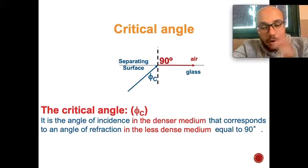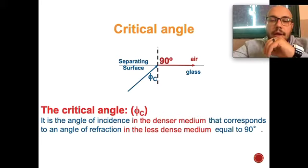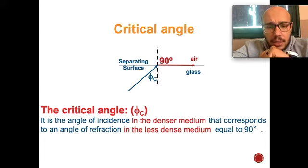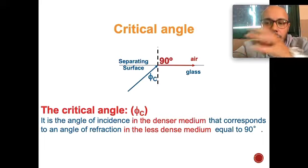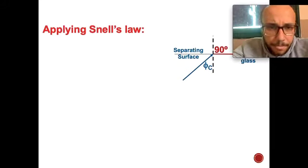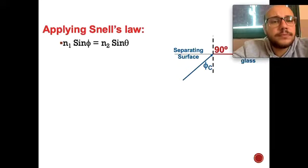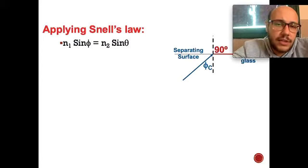Another example: oil (about 1.4) and air (1). The angle of refraction compared with 90° and the angle of incidence compared with the critical angle occurs when light passes from oil to air, not vice versa. Applying Snell's law: n₁sinφ = n₂sinθ.